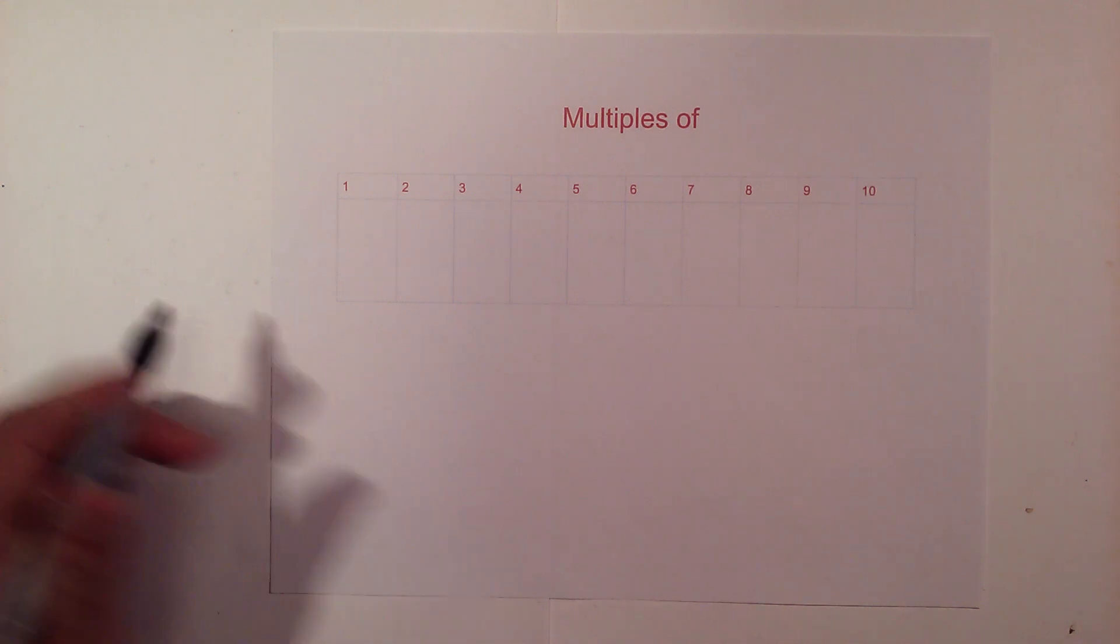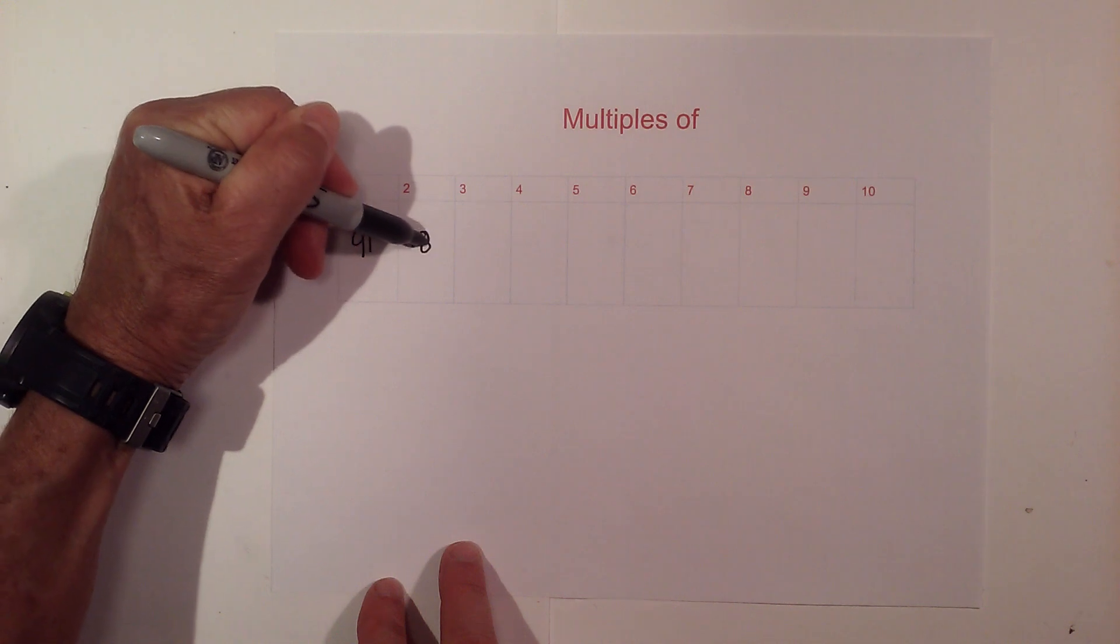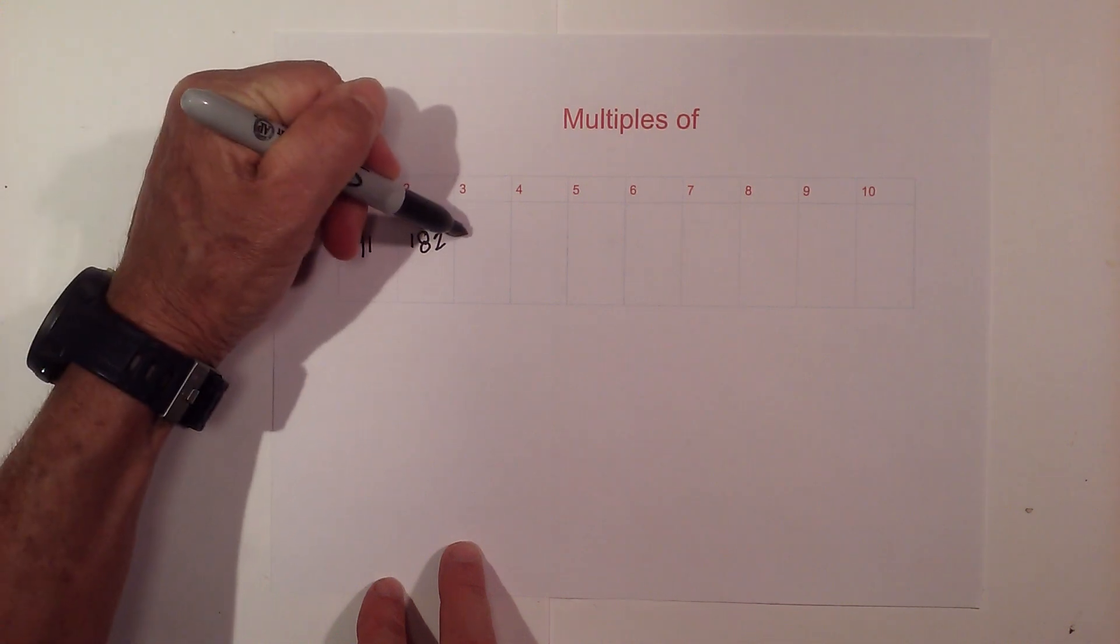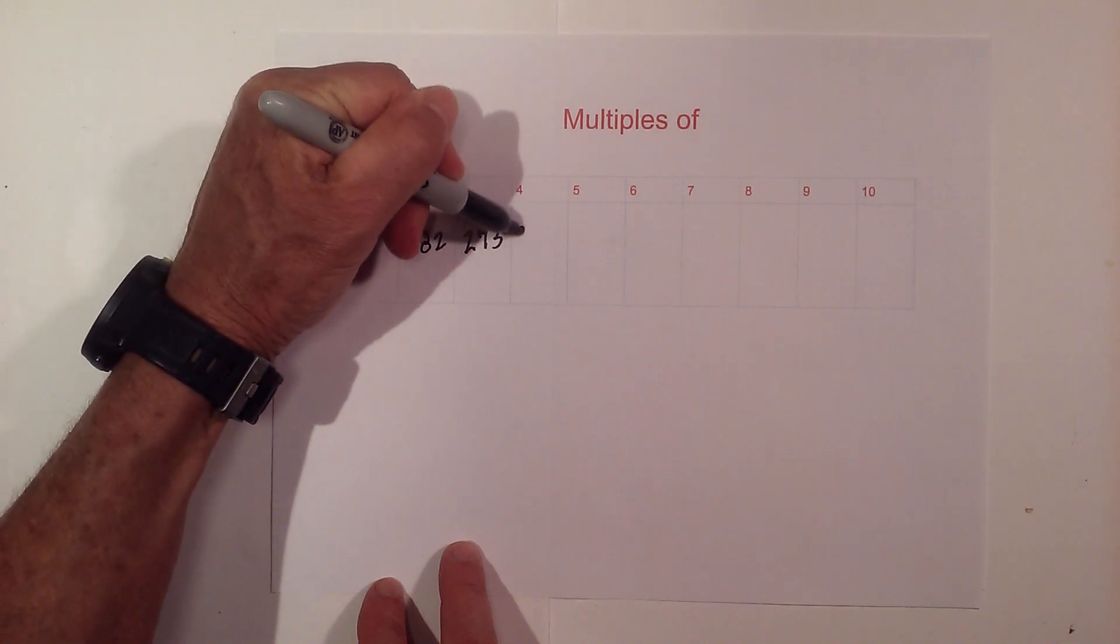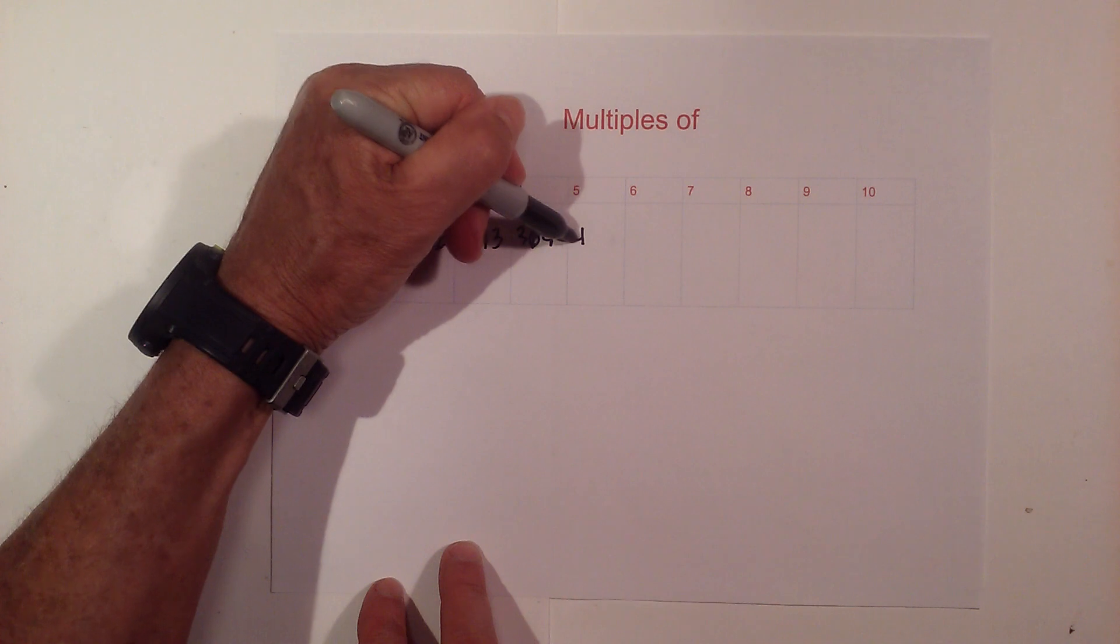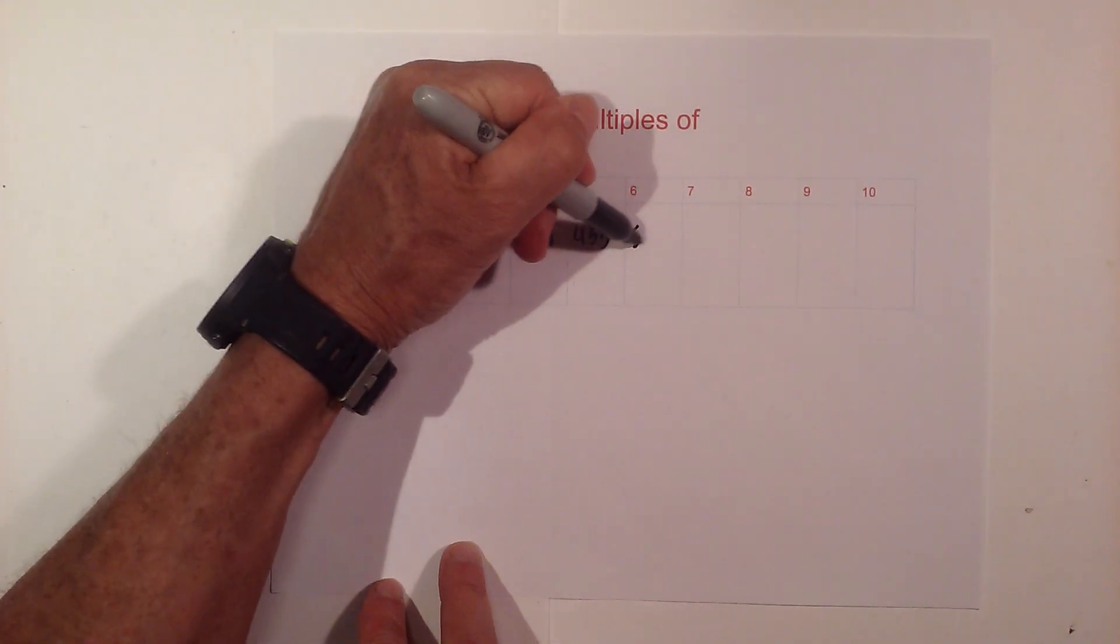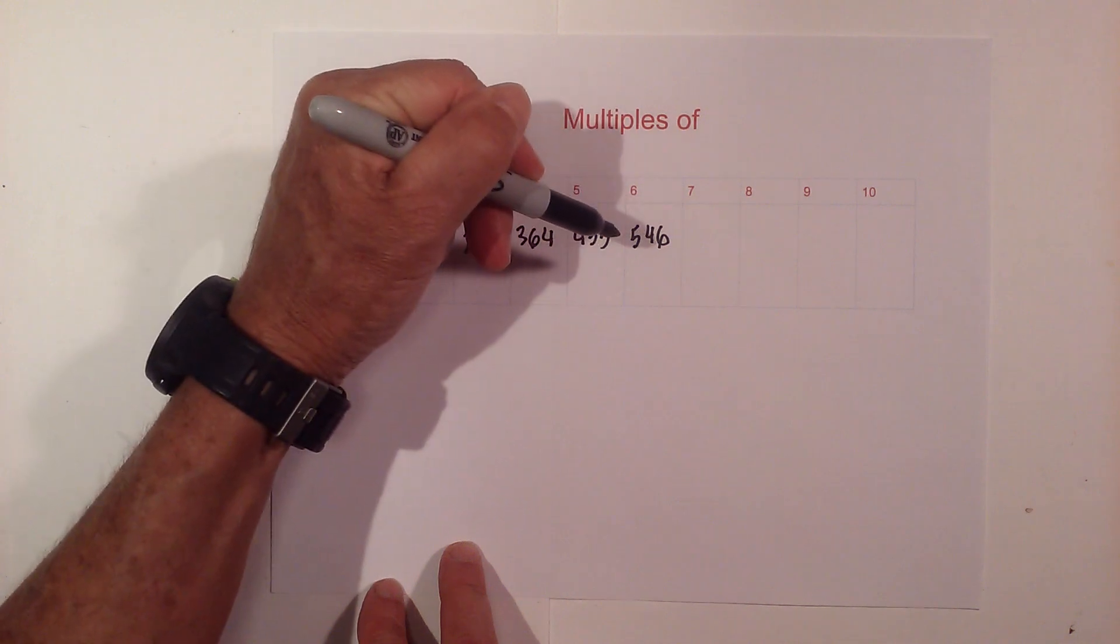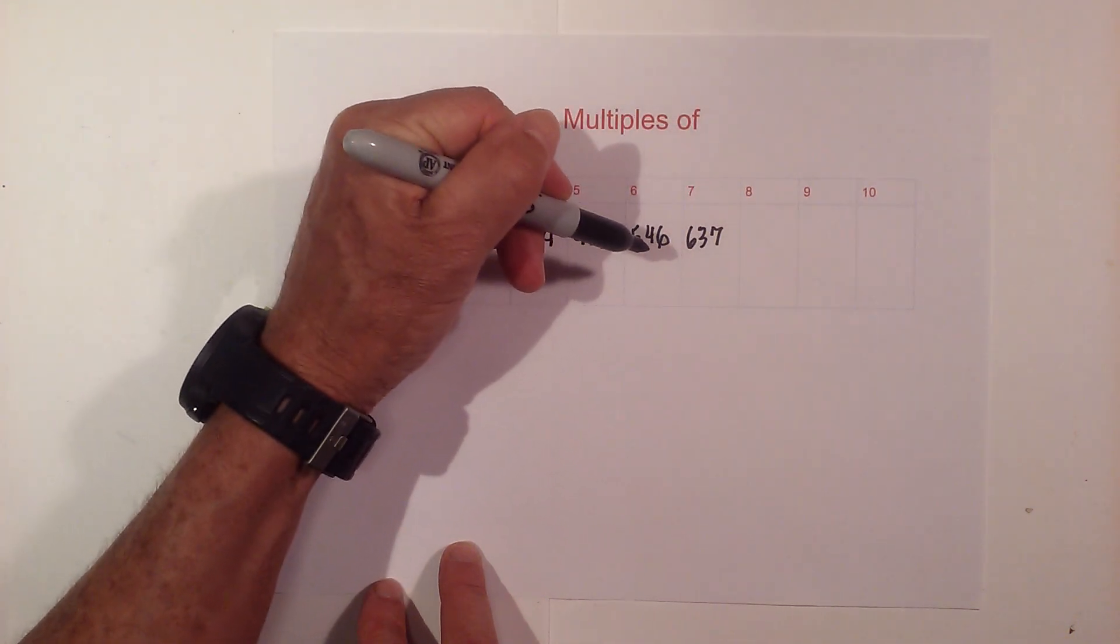The multiples of 91 are as follows: 91, 182, 273, 364, 455, 546, 637, 728, 819, 910.